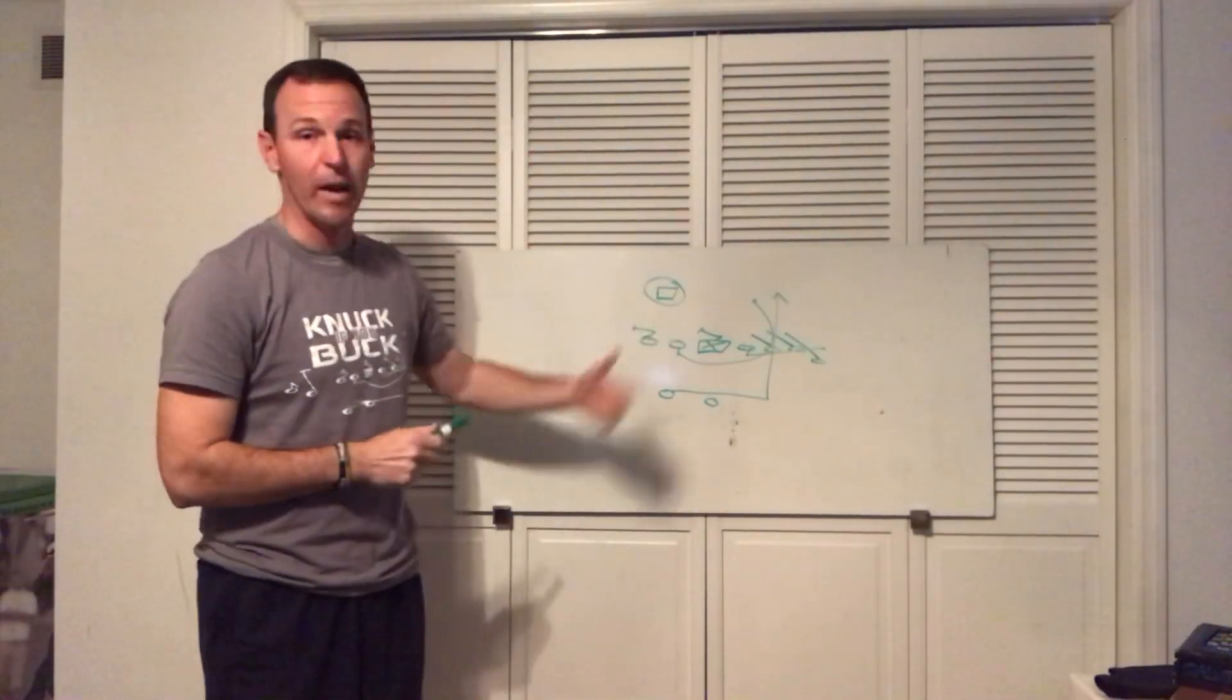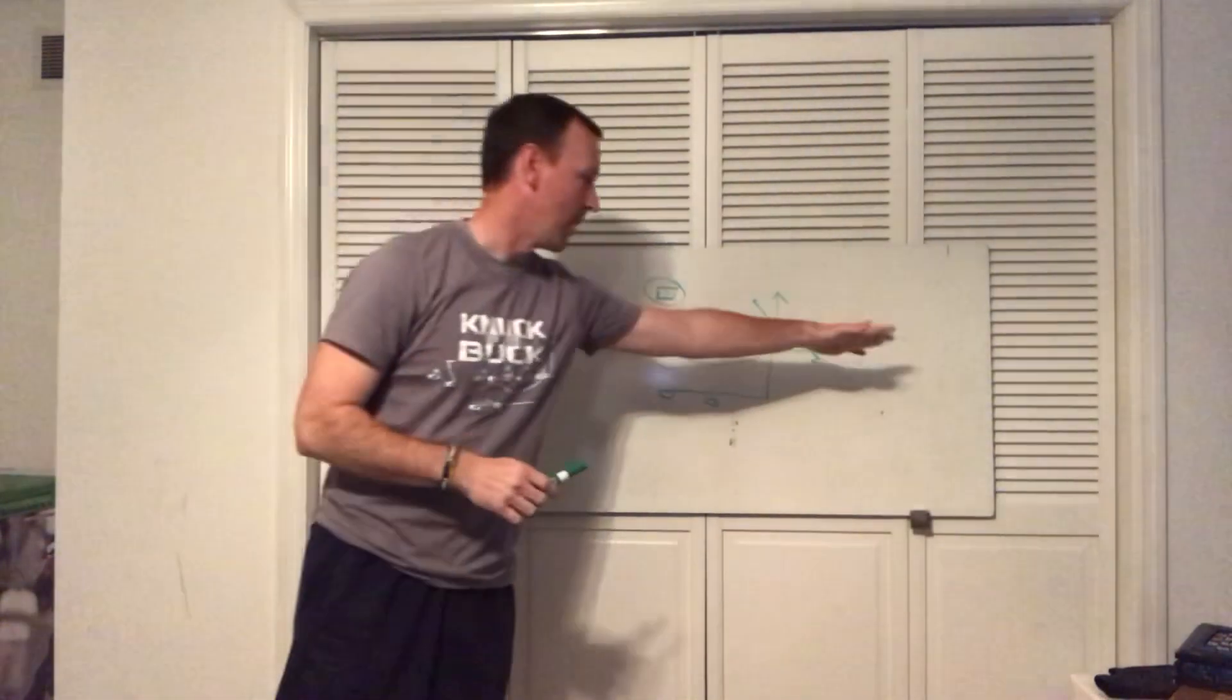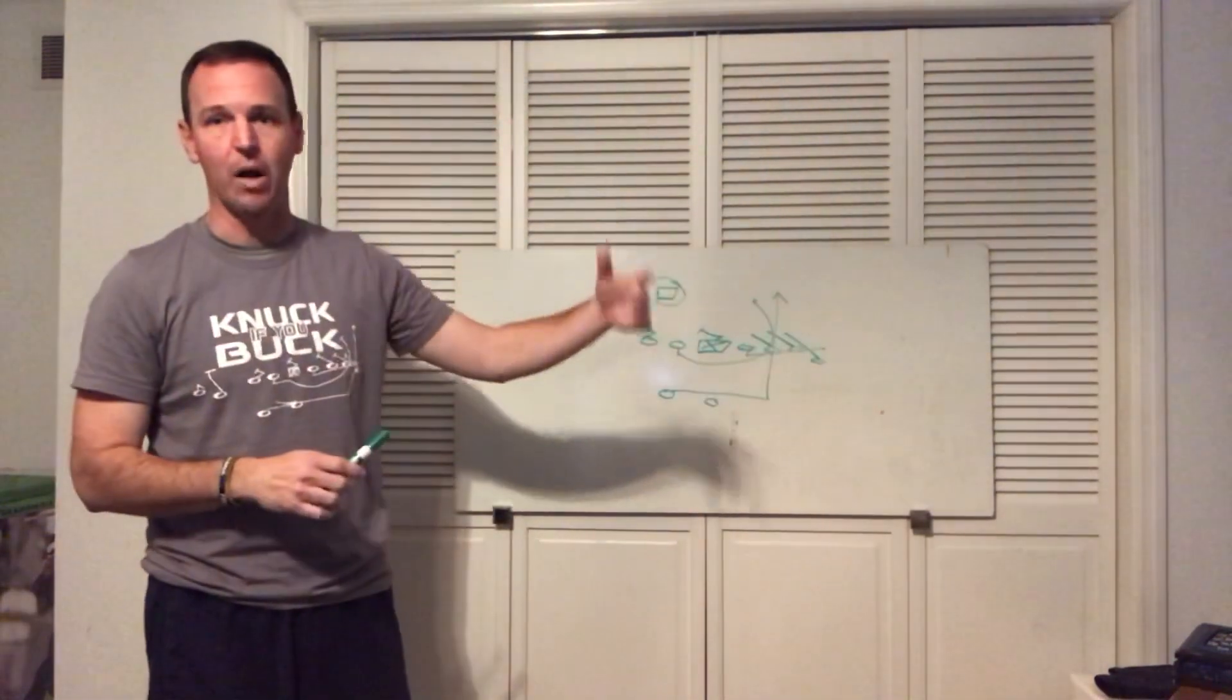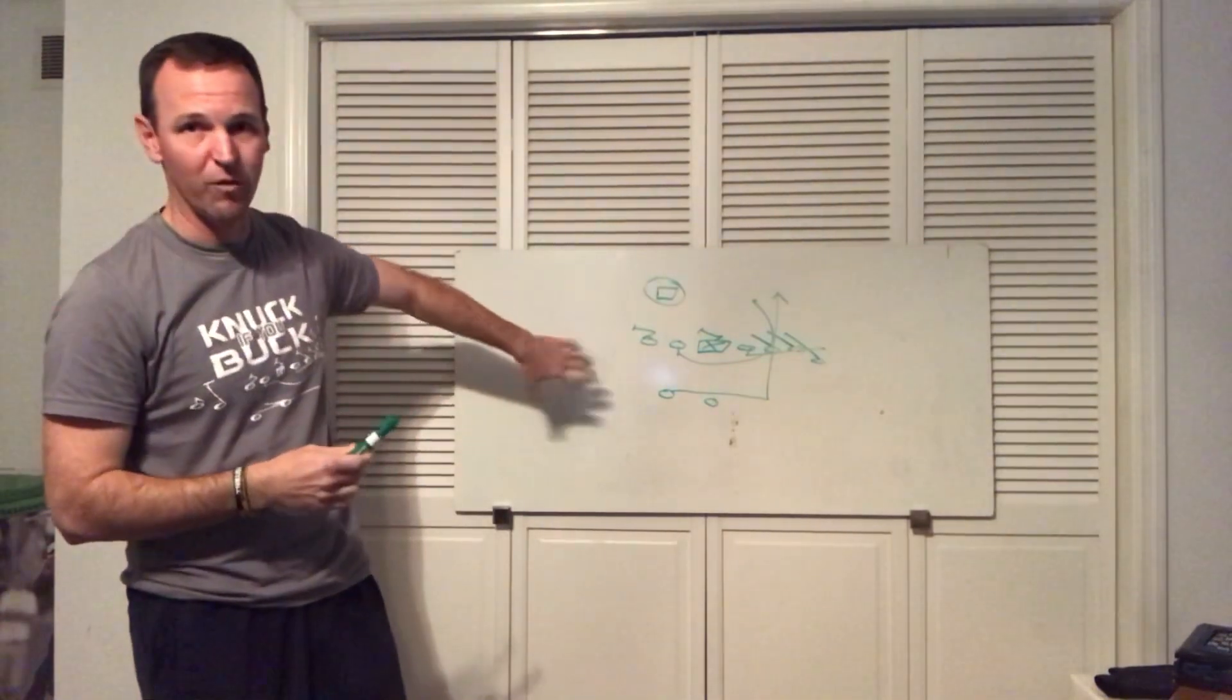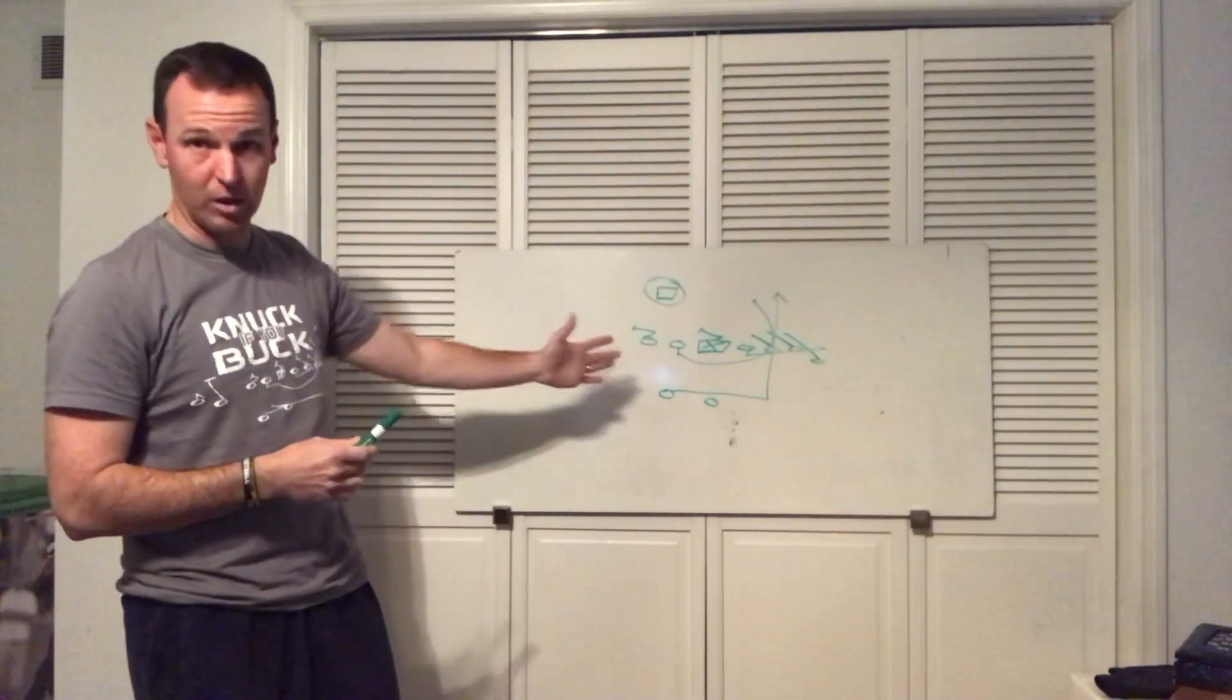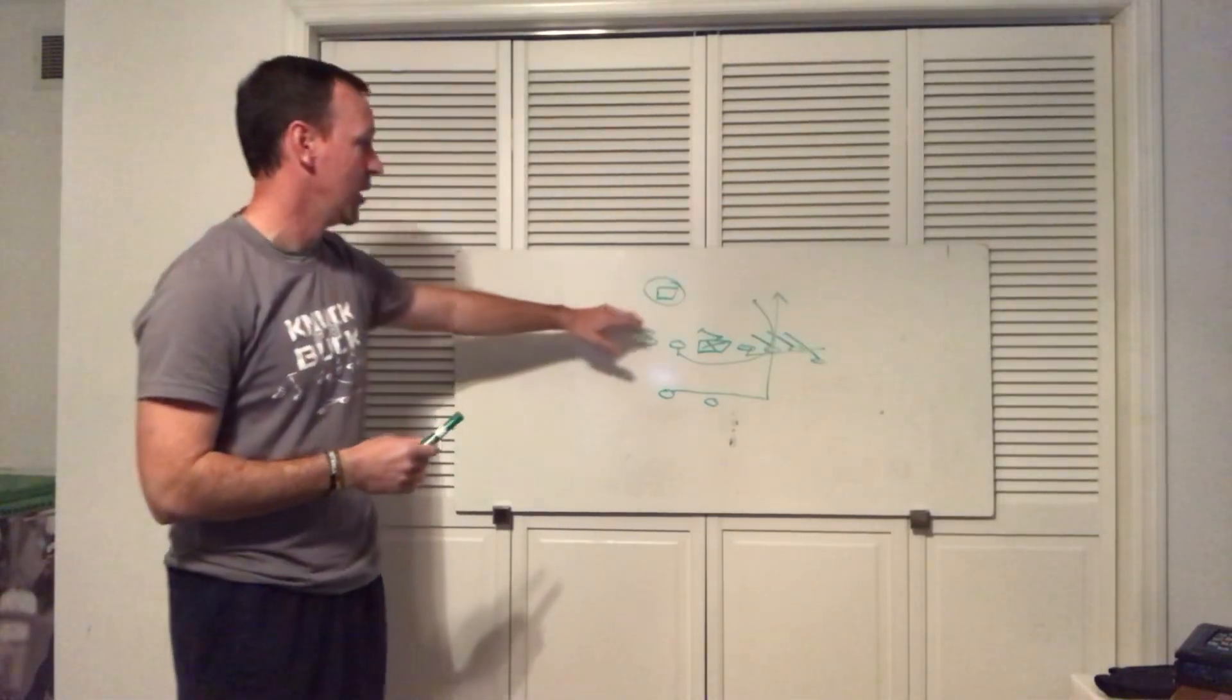Generally, if they're man-to-man, we may be in a flop set to get a guy out of the box. Or if they're zone, maybe have our twins over here running some kind of RPO: fast screen, bubble, whatever, just to kind of occupy the outside backers that are going on here. And then we'll read this guy.